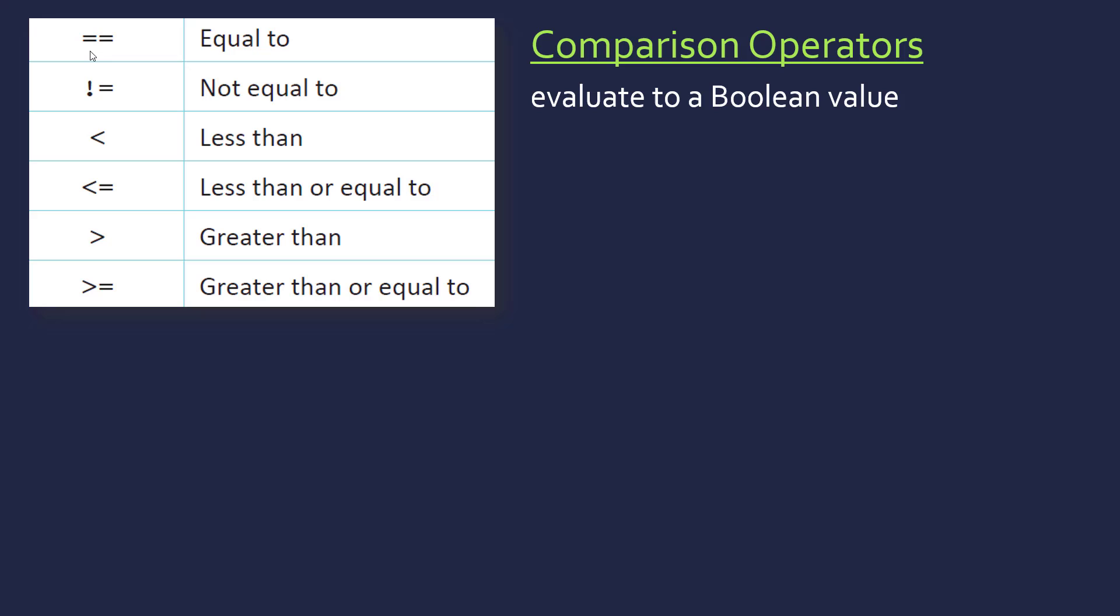So you'll recognize these. Often a variable assignment is done with one equal sign, but equal to is often shown with two equal signs. These are all pseudocode, by the way, they do vary sometimes. Not equal to is usually an exclamation mark. And then you have the standard relative comparison operators.